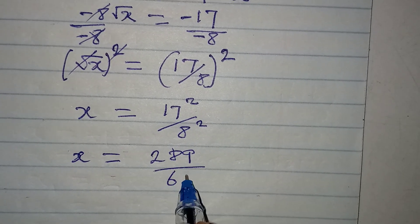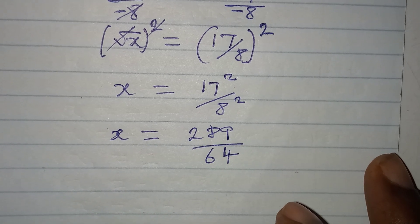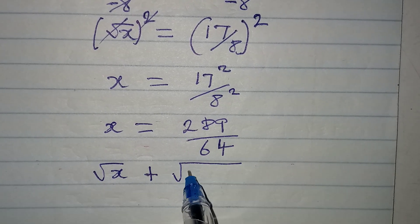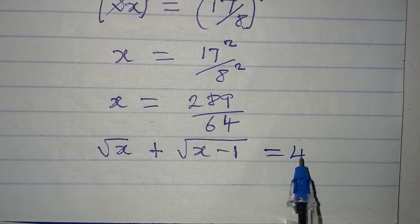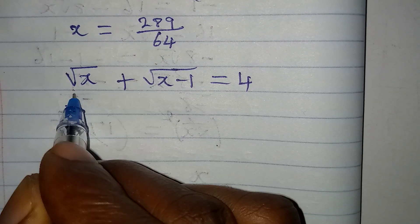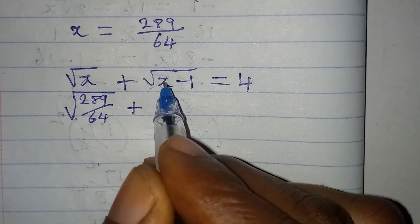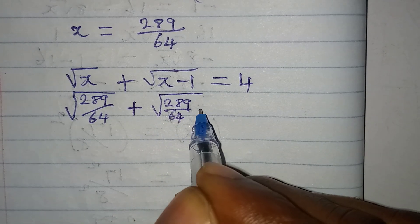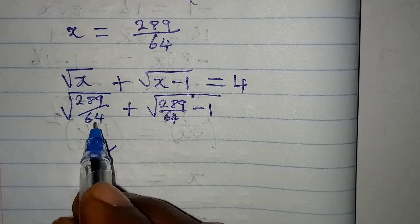This is the value of x, but let's check if it's correct. The original equation is square root of x plus square root of x minus 1 equals 4. Substituting x equals 289 over 64, we get square root of 289 over 64, which is 17 over 8, plus square root of 289 over 64 minus 1.